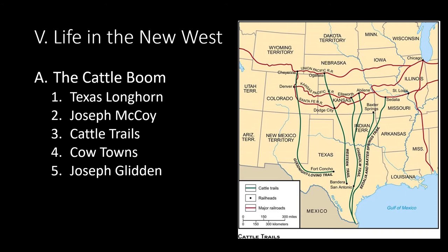The invention of barbed wire fencing by Joseph Glidden in 1873 allowed farmers and ranchers to enclose their land. The enclosure of lands frustrated small ranchers who depended on open ranges and caused problems for Native American migration patterns. Conflicting claims of land and water boundaries, along with ethnic prejudices, triggered range wars — violent disruptions between ranchers and farmers.